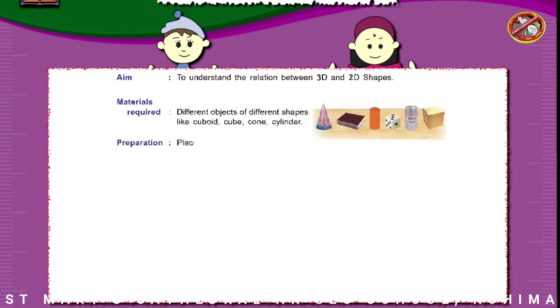Maths lab activity: Shapes from solids. Aim: To understand the relation between 3D and 2D shapes. Materials required: Different objects of different shapes like cuboid, cube, cone, cylinder. Preparation: Place all the objects on the table, divide the students into groups of four.